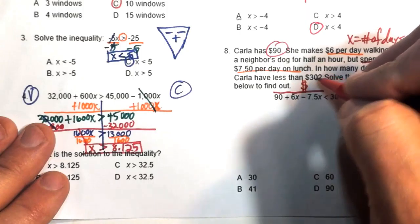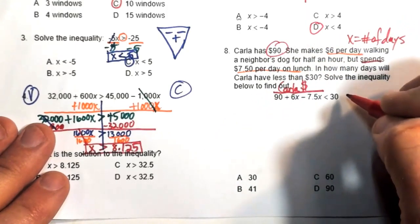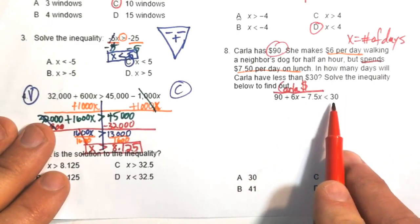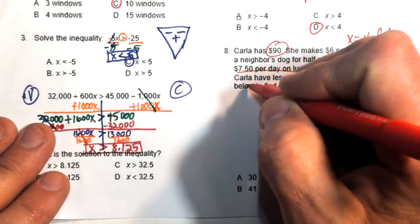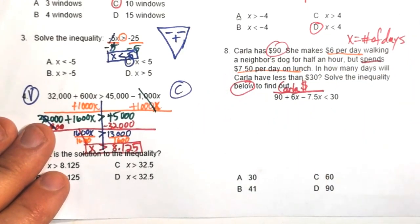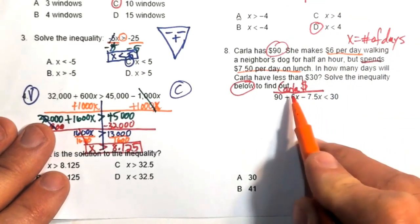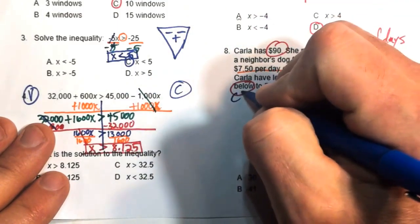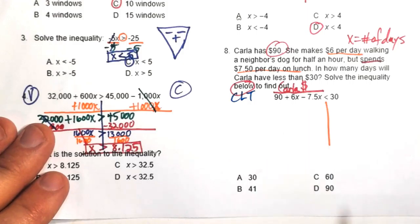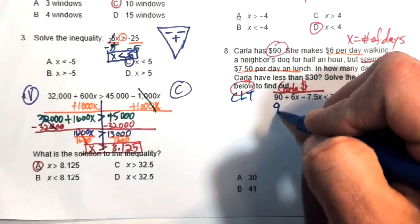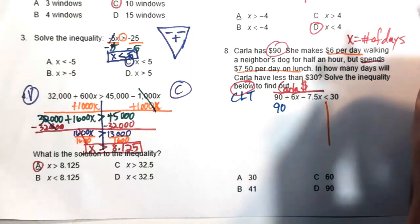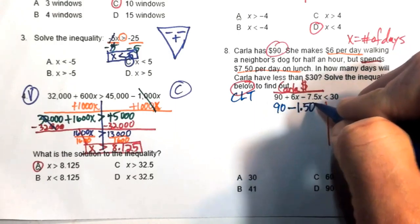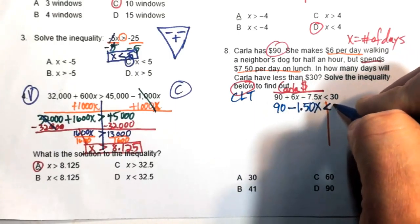This gives us Carla's total money on one side compared to 30. The inequality is less than 30 because we're asking when it drops below $30. Combining like terms (CLT): 6x and negative 7.5x gives negative 1.5x. So 90 minus 1.5x less than 30.